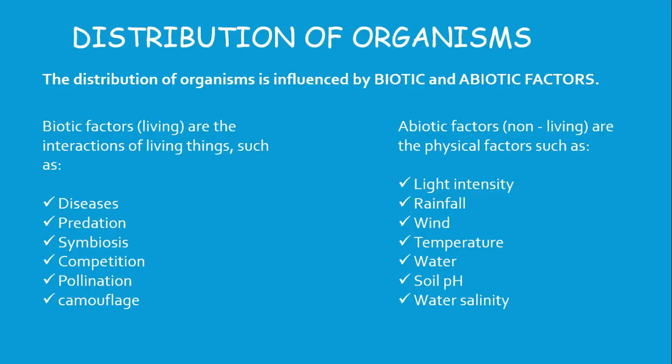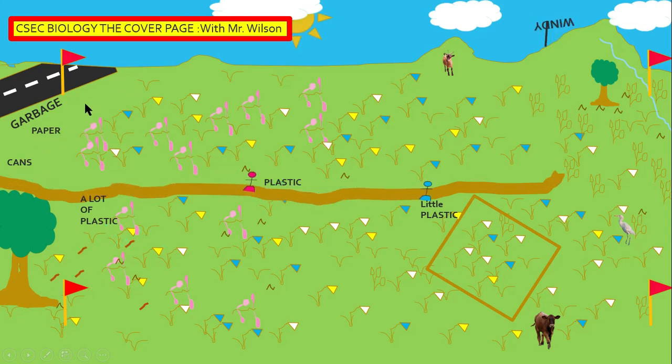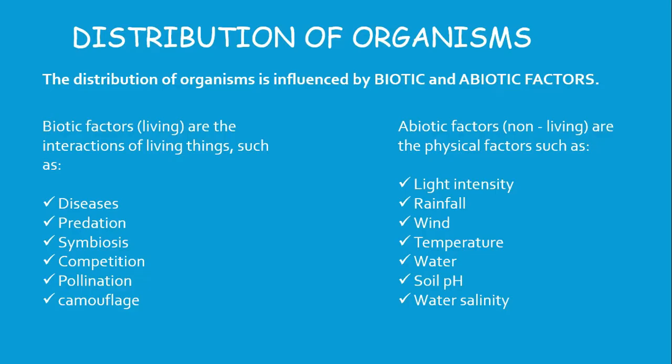The distribution of organisms will always be determined by biotic and abiotic factors. For the area sampled, we would have observed that there are areas where it is affected by human activity — garbage, paper, cans, plastic, footpaths. Biotic factors are the living component of the environment, and these would include disease, predation, symbiosis, competition, pollination, and camouflage. All these will determine where organisms decide to be and of course the distribution of the organism.